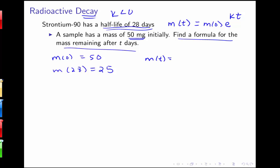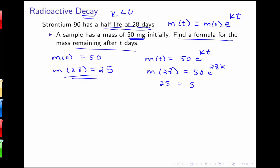We have m of t equals 50 e to the kt, and we need to use this half-life information to solve for k, just like we did with the population example. Substituting 28 for t: m of 28 equals 50 e to the 28k. Replacing m of 28 with 25: 25 equals 50 e to the 28k. So we get 1/2 equals e to the 28k. Notice that just knowing the half-life is all we needed to reach this point.